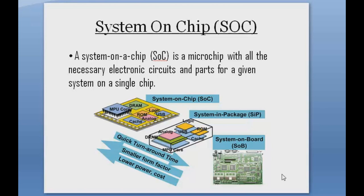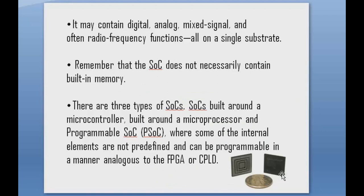There are three types of system on chip: the microcontroller, the microprocessor, and the programmable system on chip. The chip we are going to use is the programmable system on chip because we will program it for a specific activity. Things found on the chip include digital and analog mixed signals and radio frequency functions on a single substrate. Importantly, an SoC does not necessarily contain built-in memory — memory can be internal as well as external.